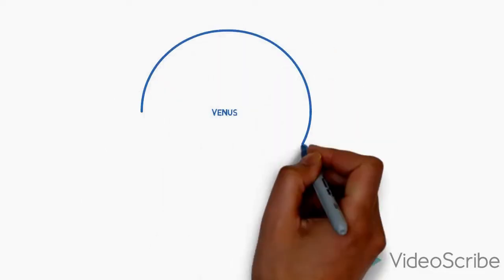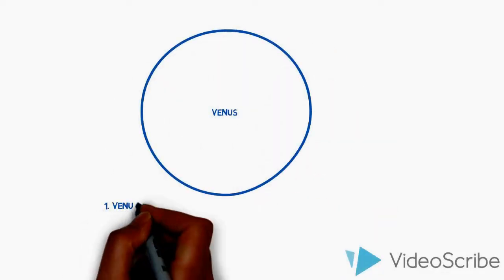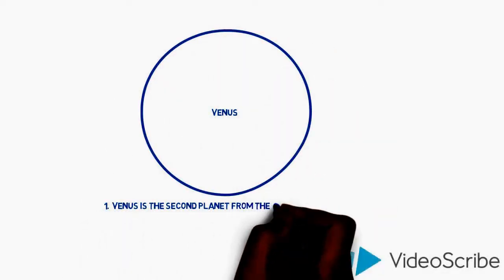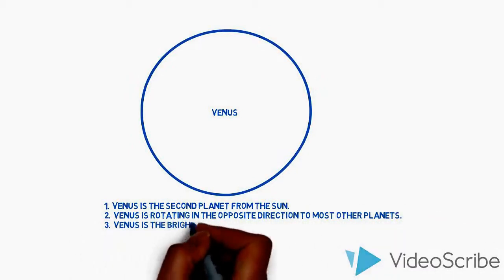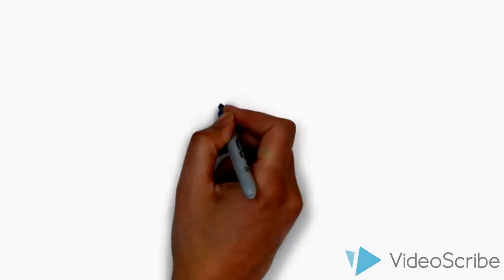Venus. Venus is the second planet from the Sun. Venus is rotating in the opposite direction to most other planets. Venus is the brightest planet in our solar system.